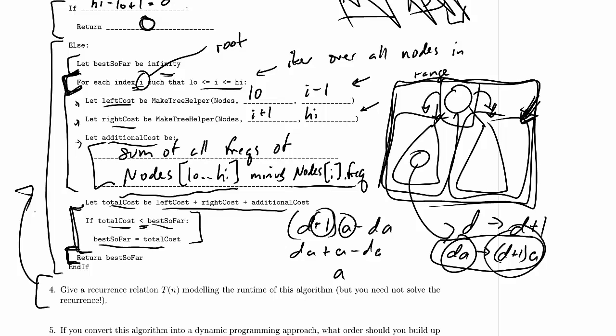Now it's really important to note that this is not yet a memoized algorithm, this is not yet a dynamic programming algorithm, it's just a recursive algorithm. So when we make a recursive call, how much does it cost?